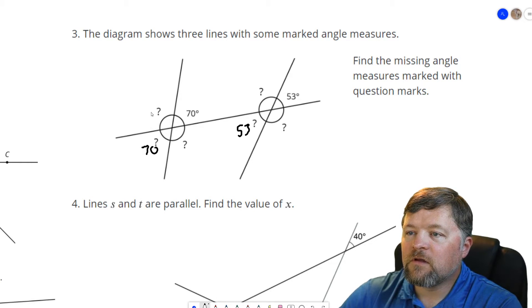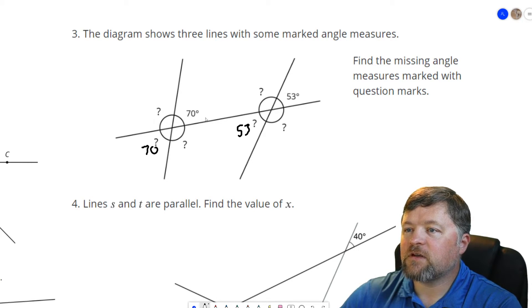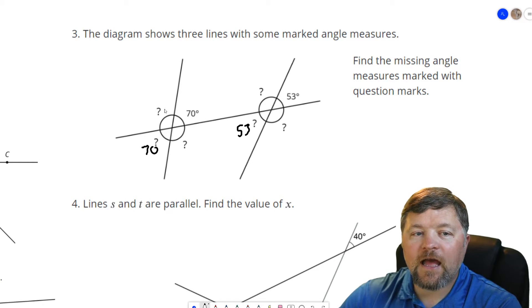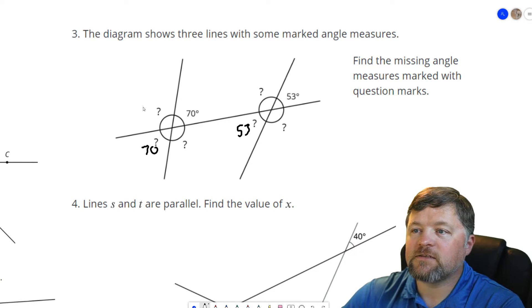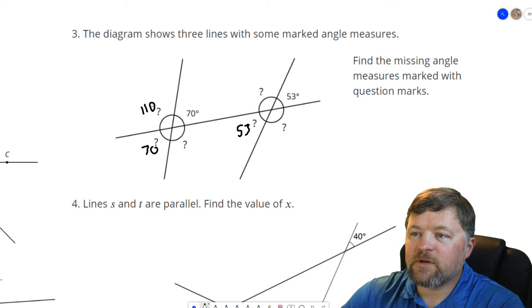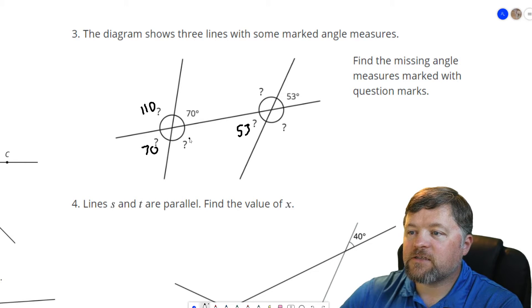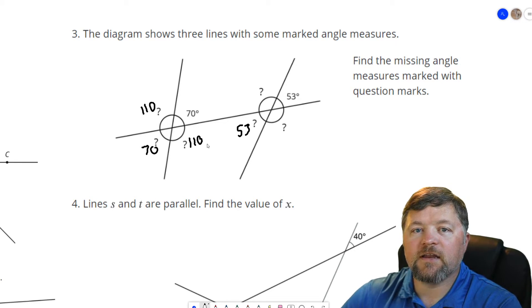Now, looking at this one, this makes up a straight line, which means this 70 plus whatever this is has to equal 180 degrees. So this has to be 110 degrees. That is a vertical angle with this, so that is also 110 degrees.